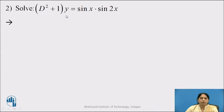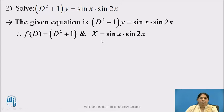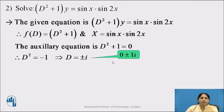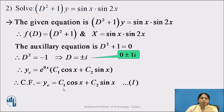Now let us solve the next example: (D² + 1)y = sin x · sin 2x. The given equation gives f(D) = D² + 1 and capital X = sin x · sin 2x. The auxiliary equation is D² + 1 = 0, giving D = ±i, complex and distinct roots written as 0 ± 1i. Therefore yc = c1 cos x + c2 sin x. We call this equation number 1.